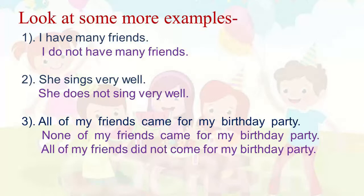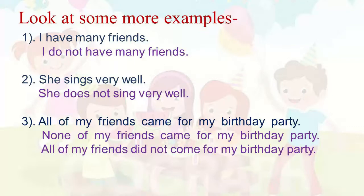Now look at the last sentence: All of my friends came for my birthday party. This is also an affirmative sentence. We can change it into a negative sentence in two ways. First: None of my friends came for my birthday party — using the negative word 'none,' meaning no friend came. The other way: All of my friends did not come for my birthday party — using 'not,' meaning few friends came, not all. Please note that when the sentence is in simple past, we use 'did' and the first form of the verb is always used with 'did.' So we say 'did not come,' not 'did not came.'